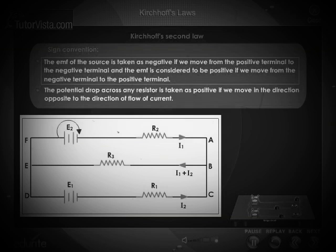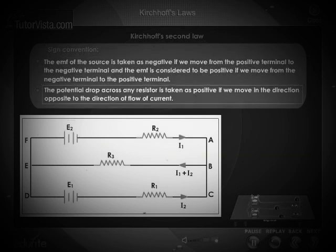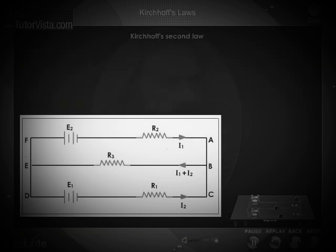According to the sign convention, the EMF of the source is taken as negative if we move from the positive terminal to the negative terminal, and the EMF is considered positive if we move from the negative terminal to the positive terminal. The potential drop across any resistor is taken as positive if we move in the direction opposite to the direction of flow of current, and vice versa.